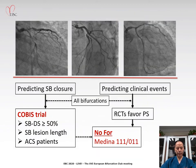For the prediction of side branch occlusion, the COPPE registry trial demonstrated that side branch baseline diameter stenosis of at least 50%, long side branch lesion length, and SES patients are strongly correlated with side branch occlusion after stenting the main vessel.